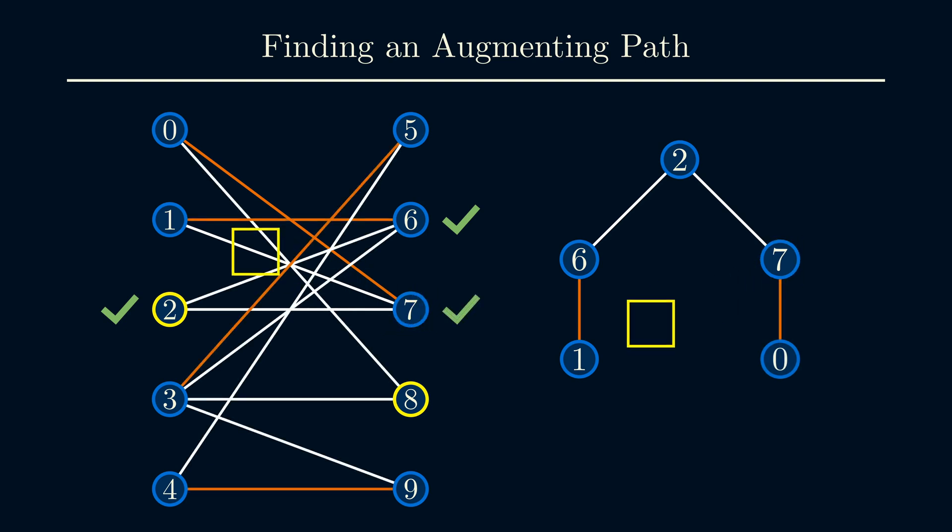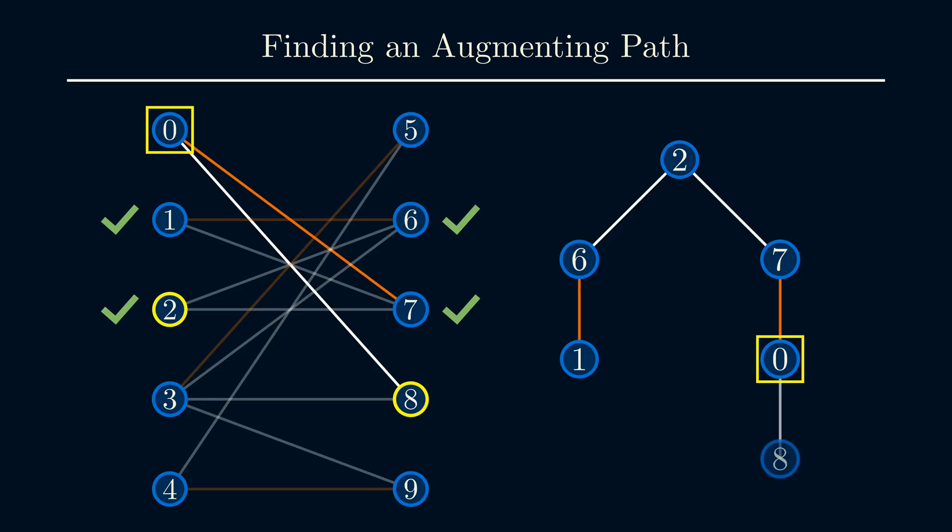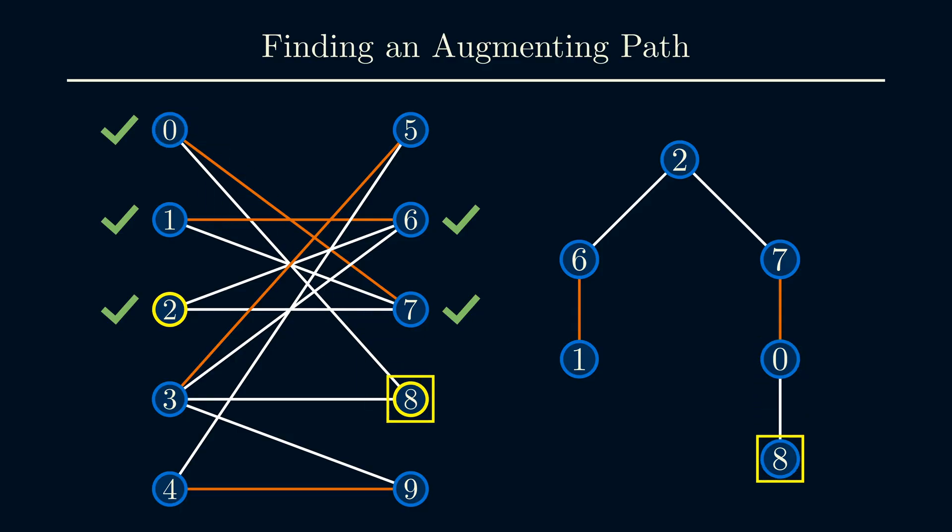Let's move to vertex 1. We need to choose an unmatched edge. 1, 7 is an unmatched edge, however, we've already explored 7. So this is a dead end. Let's move to vertex 0. Again, we need to choose an unmatched edge, because this is the third edge in our augmenting path. This time, we do have an edge. In fact, this is the vertex we're looking for. Therefore, the augmenting path is 2, 7, 0, 8.